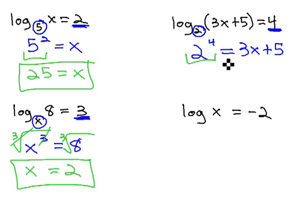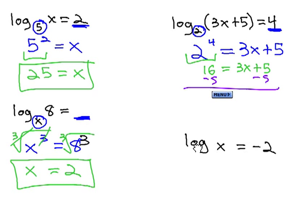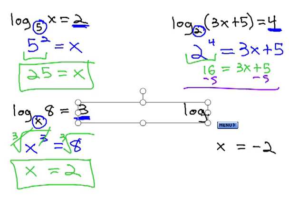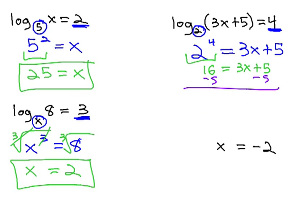We know what 2 to the 4th power is: 2 times 2 is 4, times 2 is 8, times 2 is 16, equals 3x + 5. That gives us a simple two-step equation we can quickly solve by subtracting 5. Subtracting 5 gives us 11 equals 3x, and then dividing by 3, x equals 11/3.